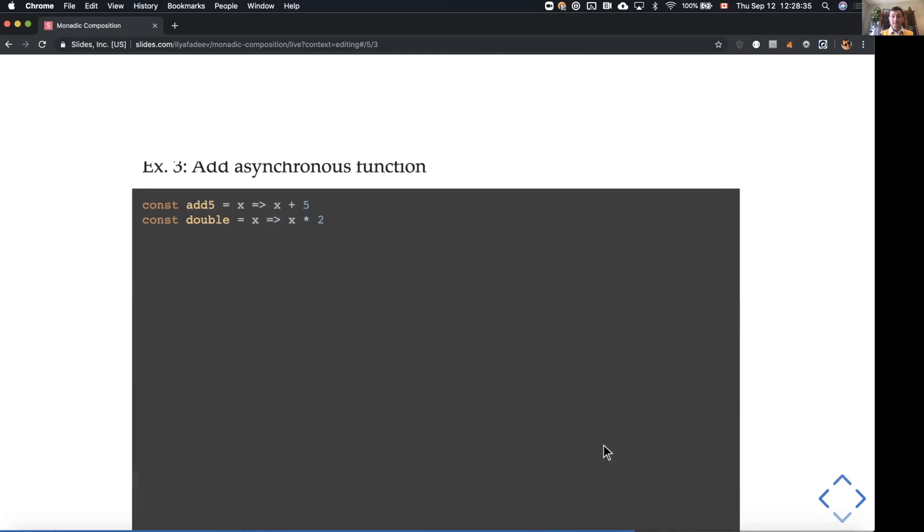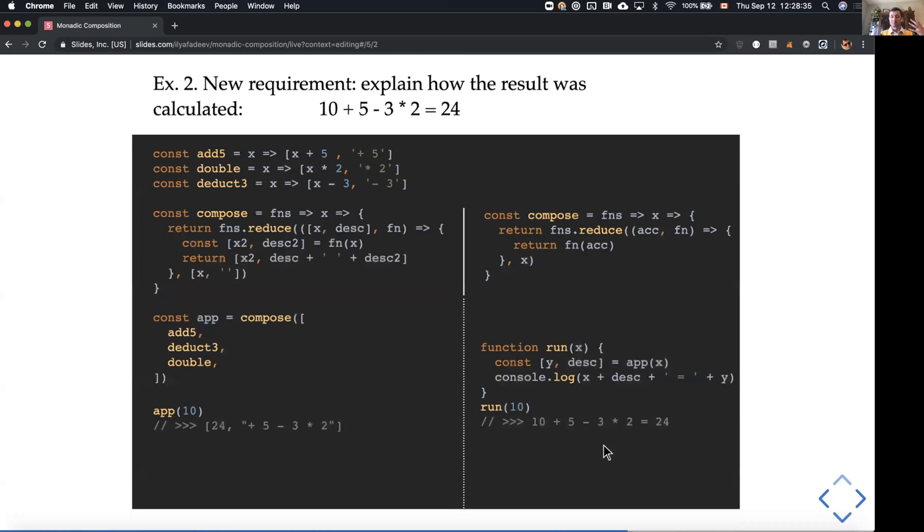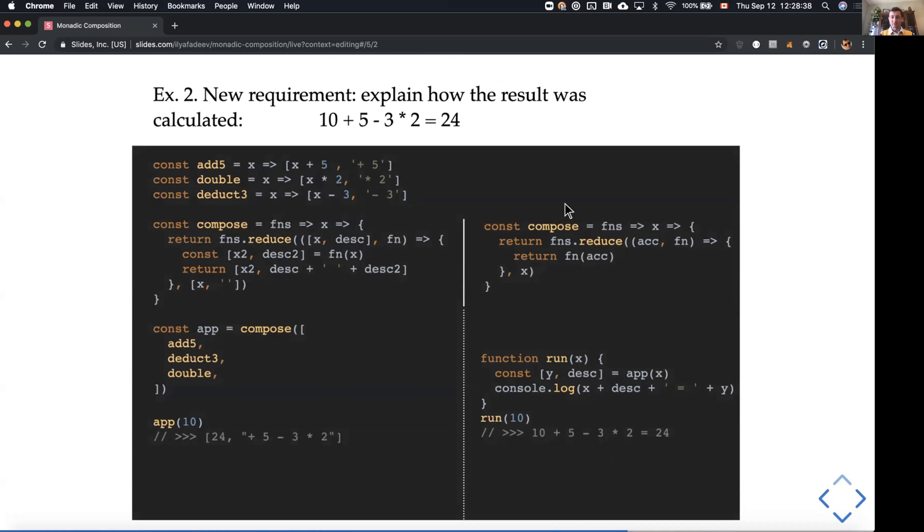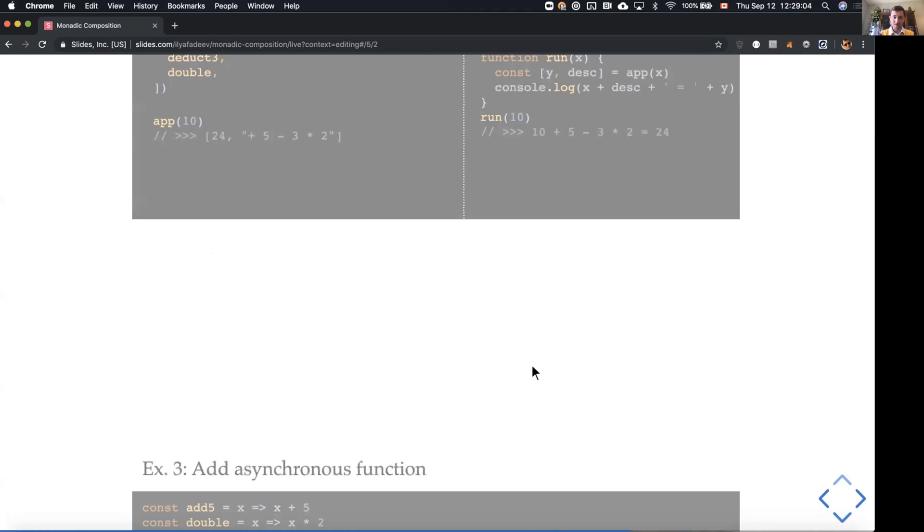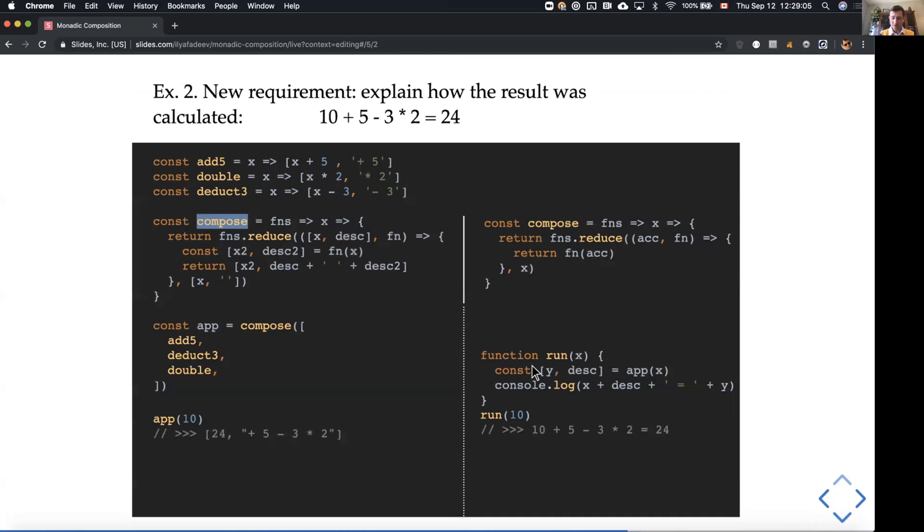Just to repeat it again, in the previous example, we looked at original mathematical composition, function composition, and here we are using monadic composition, which does something extra according to the logic of our application. So another example would be how we can use asynchronous functions in this composition, because the previous example was pretty simple.